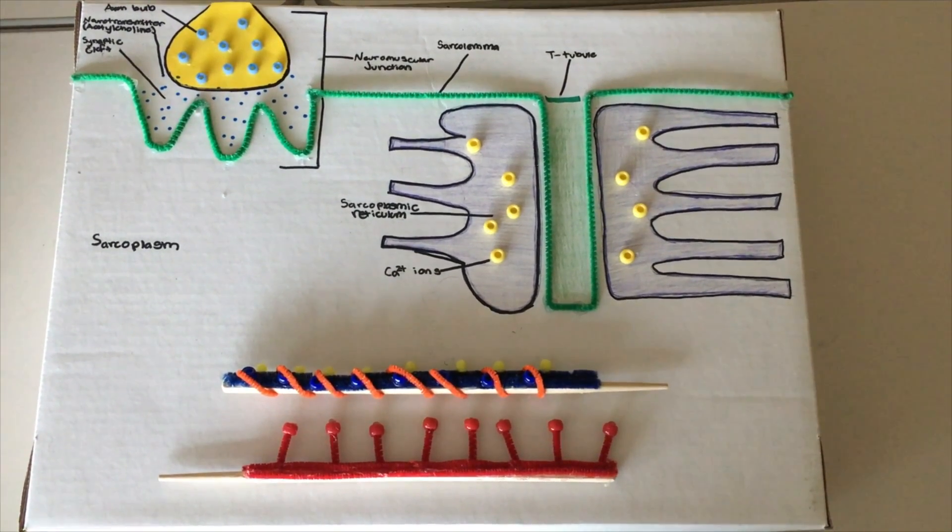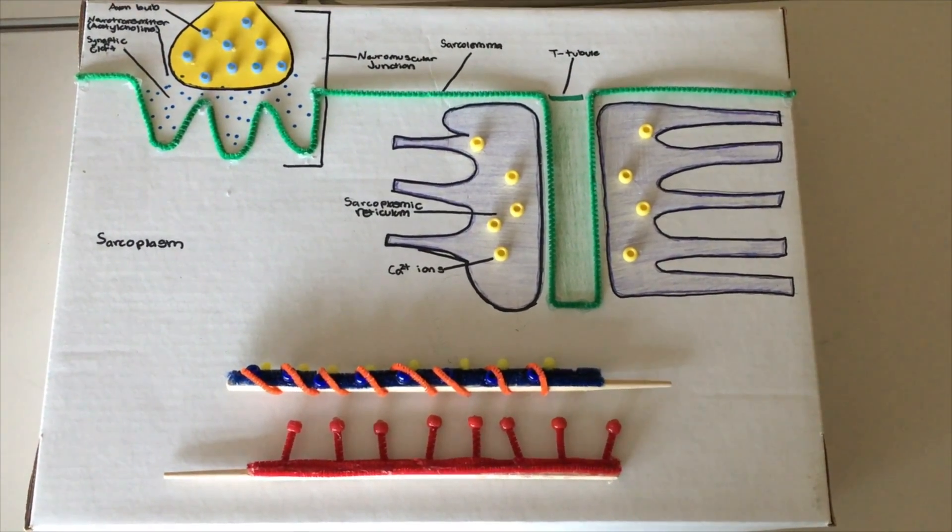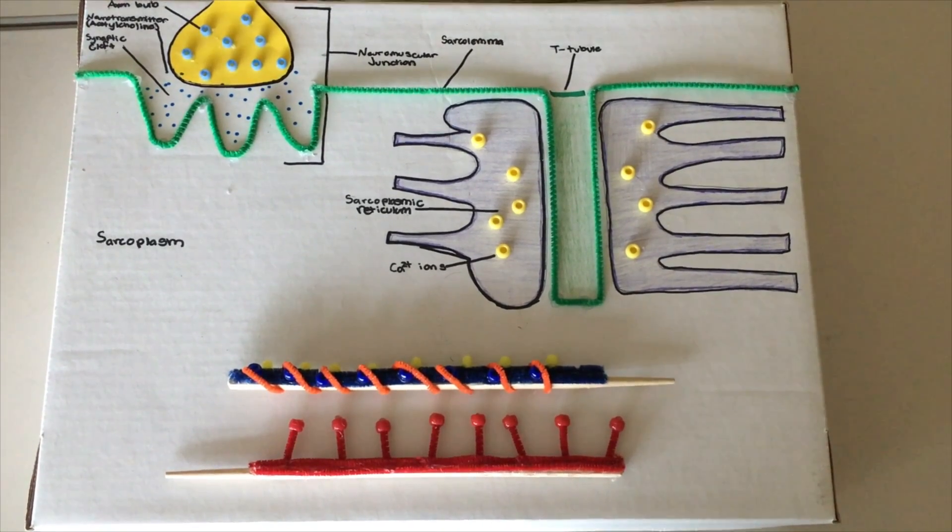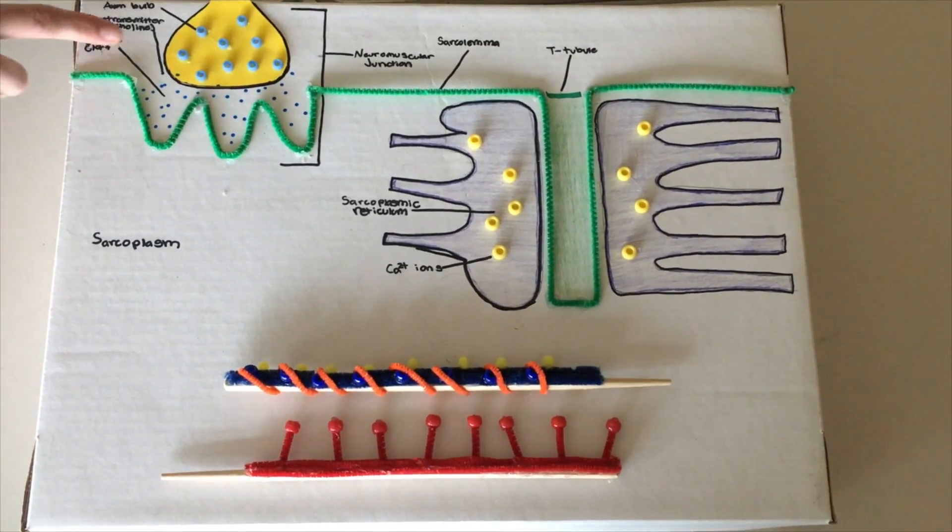An electrical signal, also known as an action potential, is conveyed down the axon of a somatic neuron to the axon bulb which is located within the axon terminal.